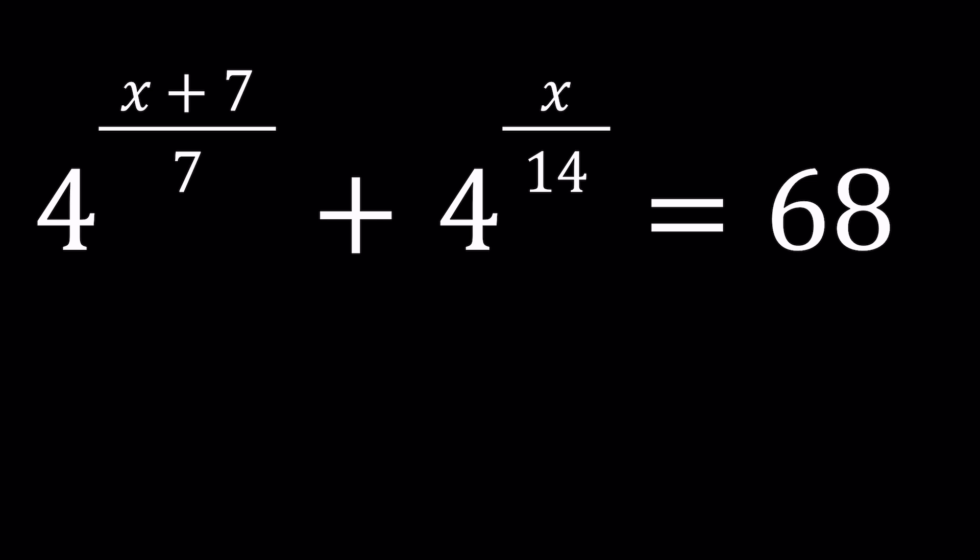Now for problems like these you should be able to find a way to associate the exponents. For example, if you have something like 4 to the power x and then 4 to the power x plus 1, then this equation can easily be solved, right? For example, suppose this is equal to 20.